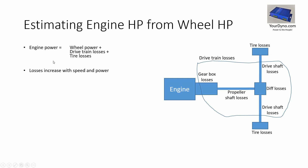The trick is really to try to estimate these two components as best as possible so that we get the engine power as accurately as possible. First thing to note is that losses increase with speed and with power. So what does that mean? Well, it means that this 15% rule is very approximate. This 15% rule says that engine power equals wheel power plus 15%. That's a very common equation — you don't need to use 15%, it could be 18% or 12%, whatever you think is correct for your setup.